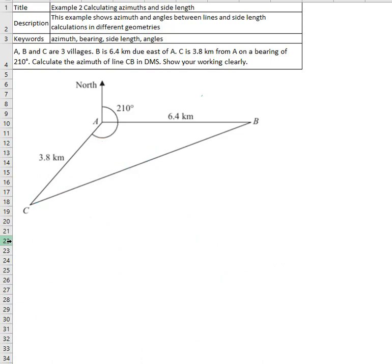To calculate the azimuth of line CB, we need the azimuth of line CA. Alpha CA and alpha CB. Now we do not know alpha CA.